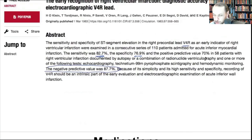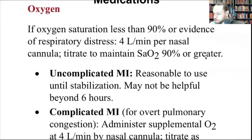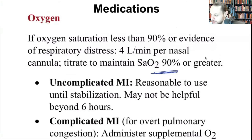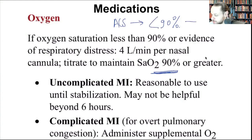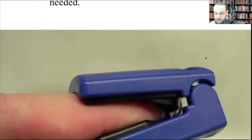Treatment summary: give oxygen only if SpO2 is less than 90%. Per AHA and NREMT protocols, oxygen above 90% saturation causes free radical damage. Titrate oxygen to maintain saturation — I don't want to see 100%. Start at two liters per minute and adjust accordingly.